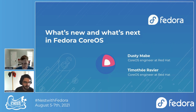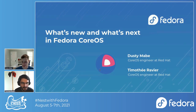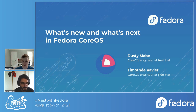I'm joined today by Timothy Ravier. He also works at Red Hat on the CoreOS team, essentially on Fedora CoreOS. He also takes part in the development of other rpm-ostree-based systems in the Fedora project, such as Silverblue and Fedora Kinoite.